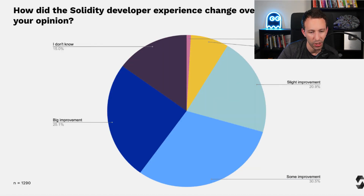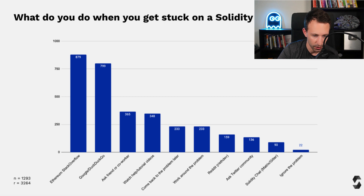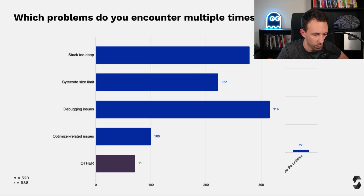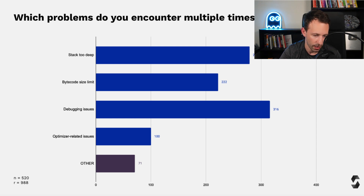How did the Solidity developer experience change overall in the last year? For more than 50%, there was either some improvement or a big improvement — and that's my feeling as well. When stuck on a Solidity problem, most people go to Ethereum Stack Exchange, though I feel it will be quickly replaced by ChatGPT. Common problems encountered multiple times include stack too deep, bytecode size limit — a smart contract can be a maximum of 24 kilobytes — and debugging issues, which remains something difficult in Solidity.